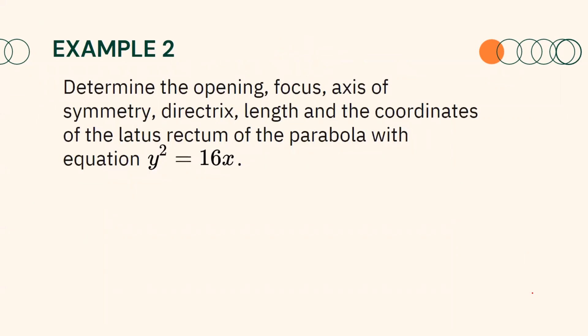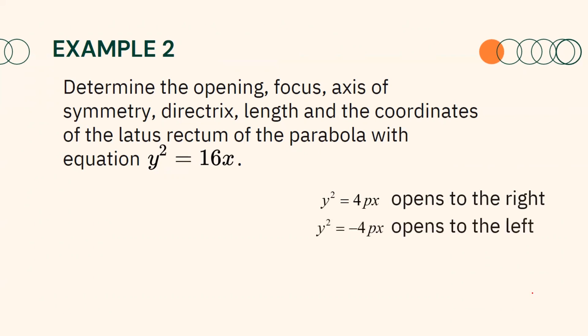Let us have another example. Determine the opening, focus, axis of symmetry, directrix, length, and the coordinates of the latus rectum of the parabola with equation y² = 16x. Since the squared term is y, the parabola either opens to the right or to the left. Since 4p equals 16 and is positive, the parabola opens to the right.